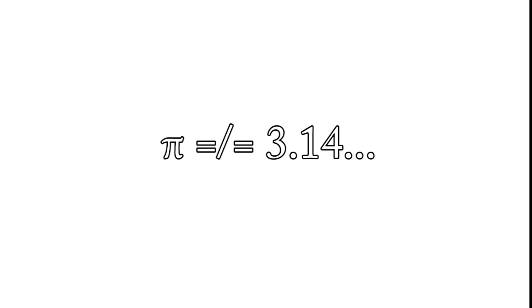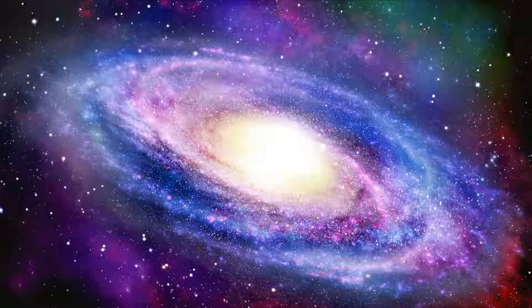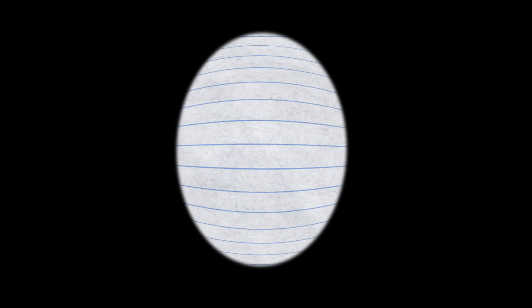This happens because we folded the paper, but imagine we don't, and we still somehow get something different from the normal pi value. That would mean that space-time has a curvature, just like the paper did.